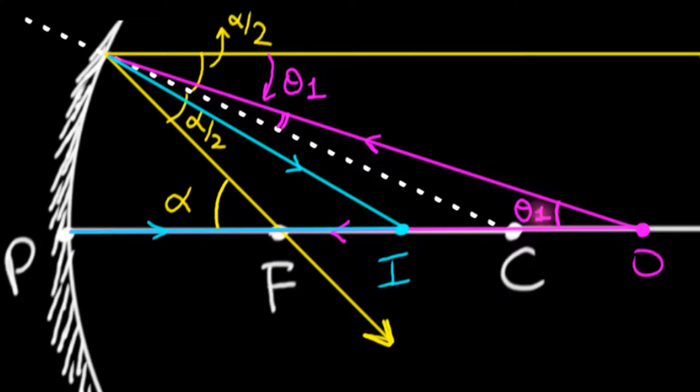Just like how I define angle theta 1, I'm going to define angle theta 2 here. This is the angle for my reflected ray with the principal axis. And notice, due to alternate interior angles, this is theta 2. So, this whole angle from here all the way till here is theta 2.